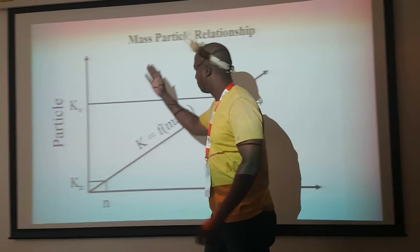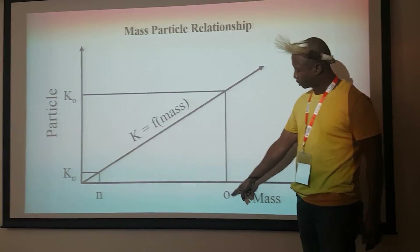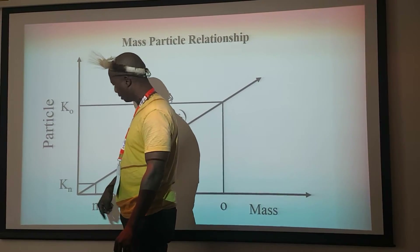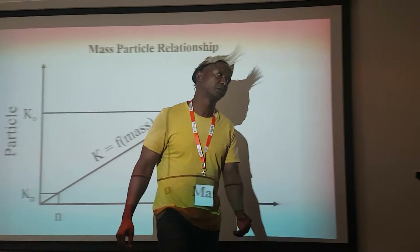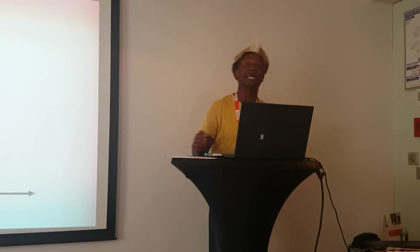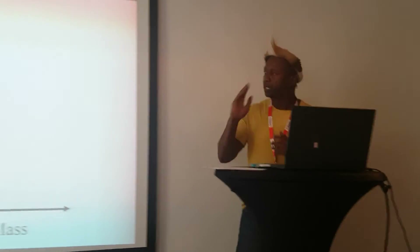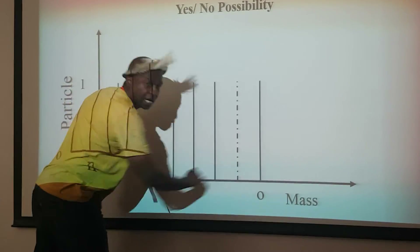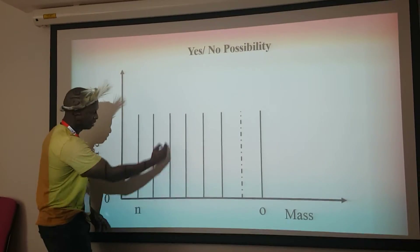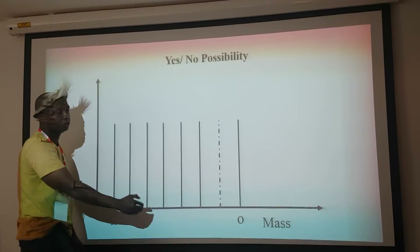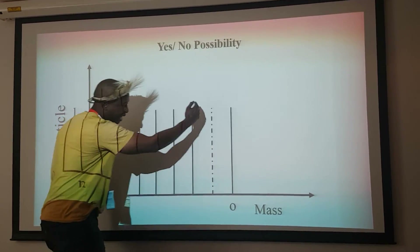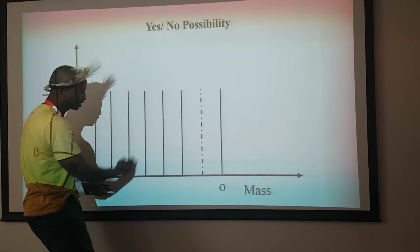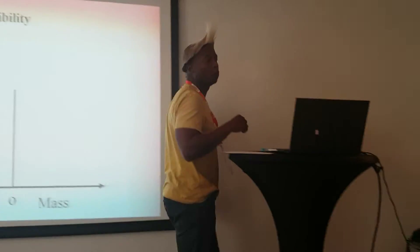We have a particle with a mass — the largest particle will have a mass of O and the smallest particles will have a mass of N. The smallest particles we know, photons, have no mass but they do have a rest mass. Now, between N and O, not everything becomes a particle. Only certain masses can become particles — only certain masses will become particles worthy of nodes.